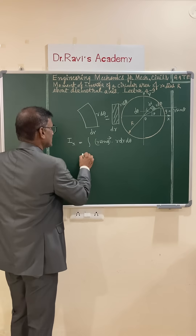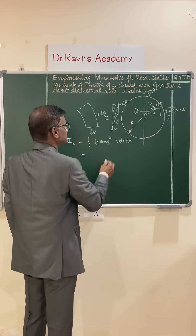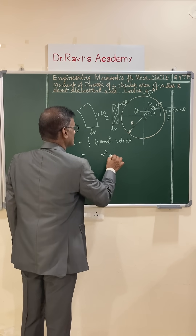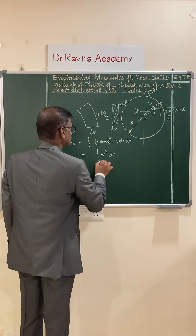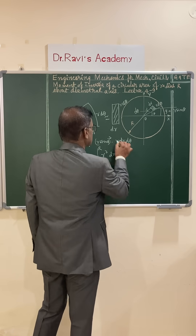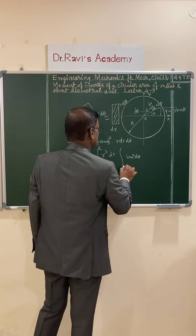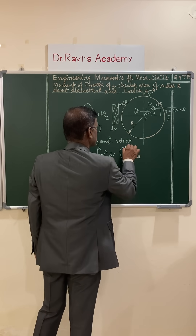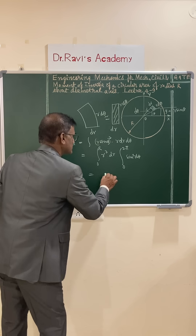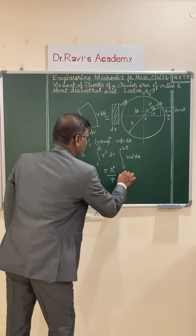Integrating using a double integral, we separate it into r³ dr integrated from 0 to capital R, and sin² theta d theta integrated from 0 to 2π. Using the standard result, the sin² theta integral gives π, so the result becomes π·R⁴/4.